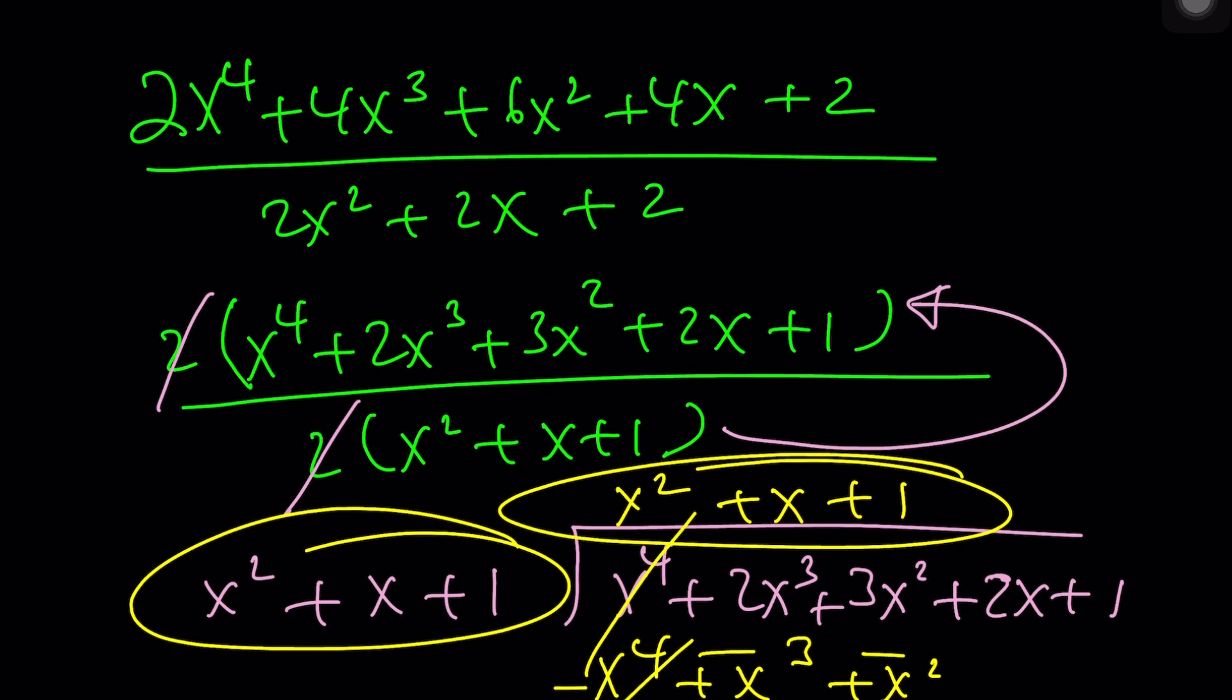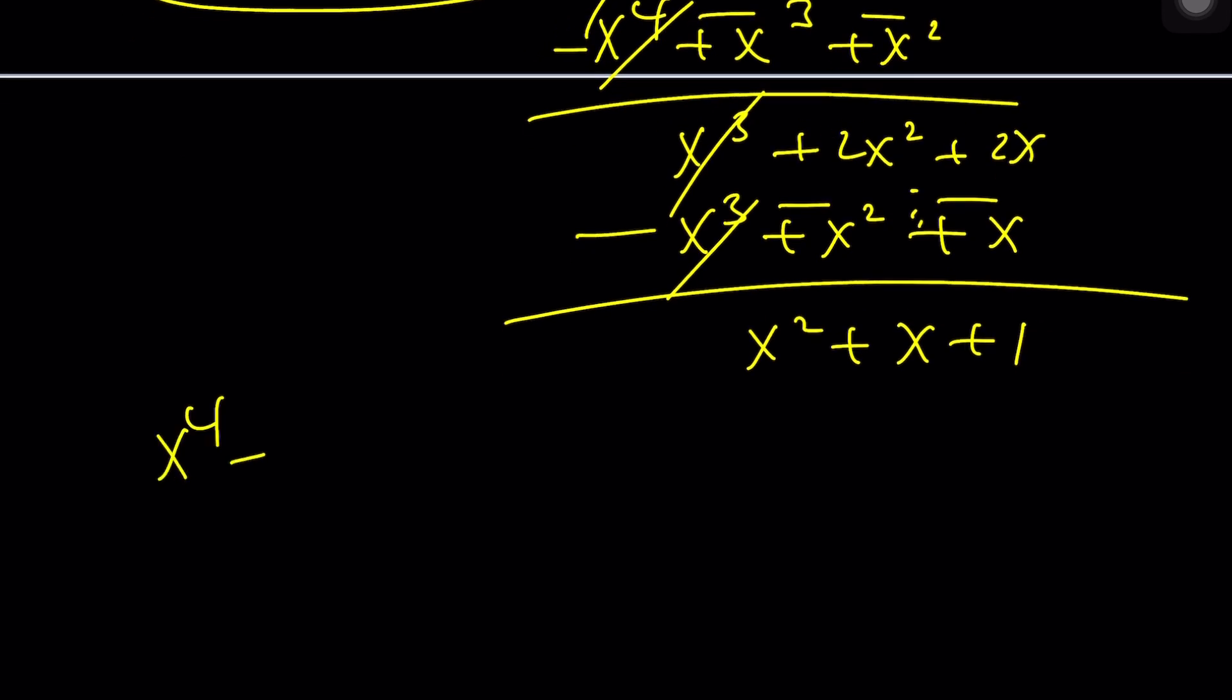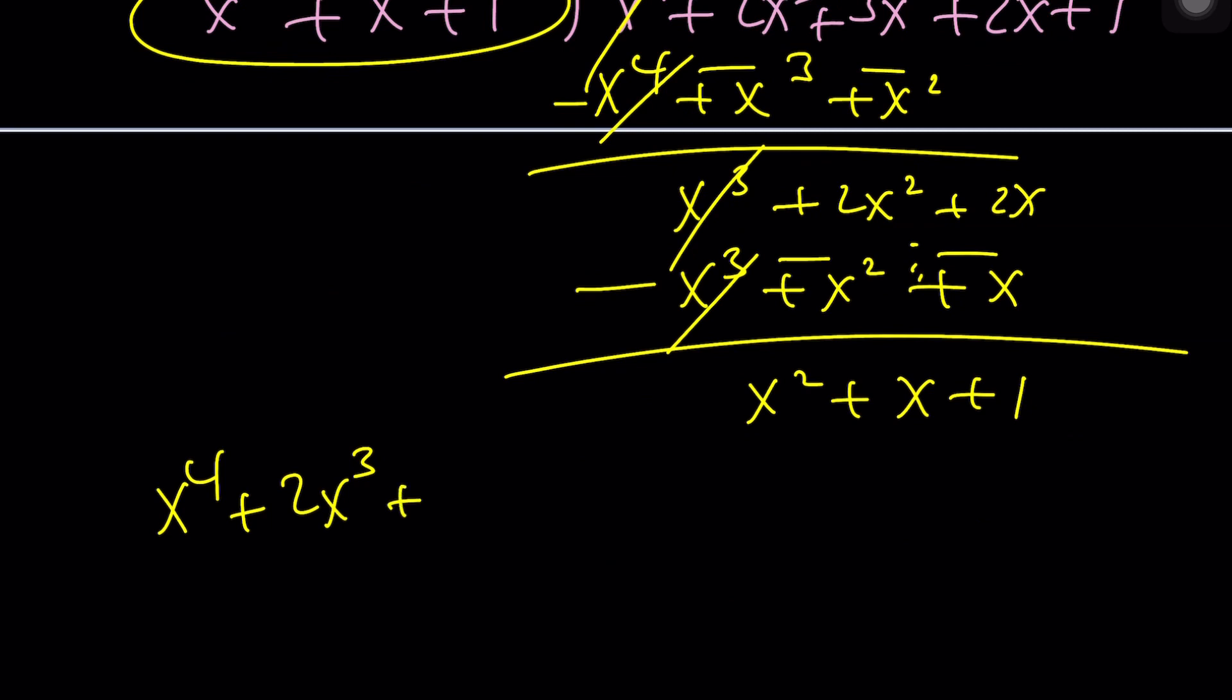Now let's take this x to the 4th plus 2x cubed plus 3x squared plus 2x plus 1, and prove that this is indeed (x squared plus x plus 1) quantity squared, okay? How do we do that?